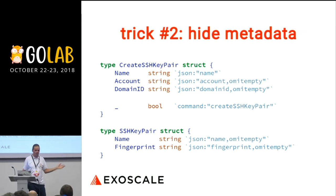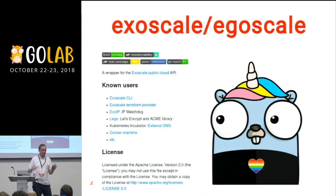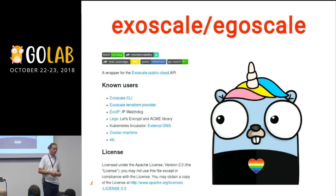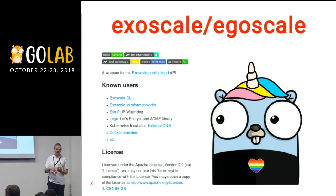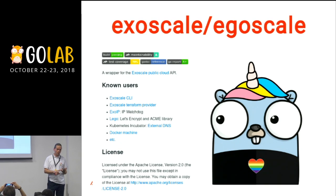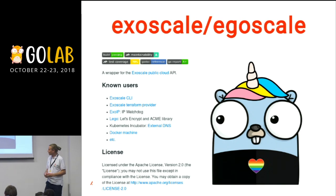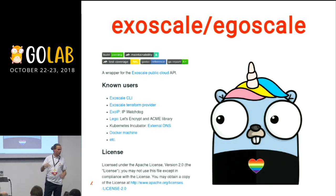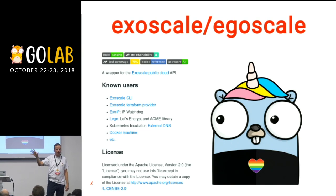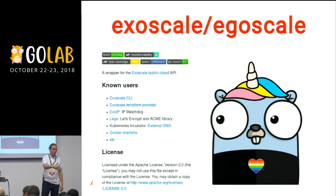I don't know if it's a good idea — probably don't do that. But we use it there. So that library is called Eggoscale. And if you want to Google it, we use it in our CLI, in the Terraform provider, the Lego ACME — which is used by Traefik or Caddy, the web servers that give you a TLS certificate automatically — the Kubernetes incubator External DNS, so in your Kubernetes you can put annotations with domain names and it registers automatically on Exoscale, the domain name for a pod, application, or service.